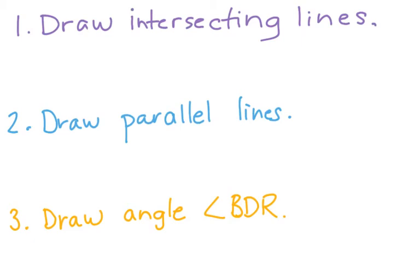For number one, I want you to draw intersecting lines. Number two, draw parallel lines. Remember, here is a little hint if you look at the word parallel. And number three, draw angle BDR, and please label the points B, D, and R. Go ahead and pause the video and draw these three things on your whiteboard.